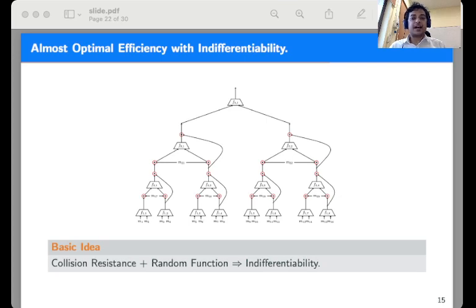Now this idea of indifferentiability is analogous to the well-known principle that collision resistance followed by PRF gives us a PRF. The same idea works here. The collision resistance of the ABR modes ensure that the queries to the root are all fresh, and as the root function in itself is a random function, the arguments go through.